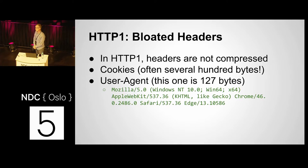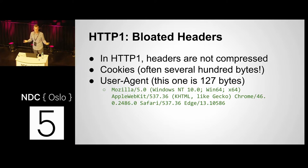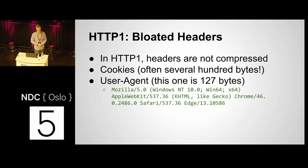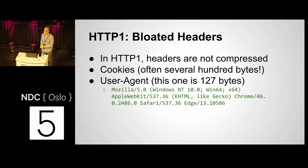With H1, even though you can do multiple connections, on every connection you send this huge user agent. The user agent for the latest version of Microsoft Edge says it's Mozilla, but it could be Apple WebKit, but it could be like Gecko, and it's Chrome or Safari, but it's really Edge. The latest Chrome for Chrome 51 is about 120 bytes — a large number of bytes wasted in upstream bandwidth on every single request.